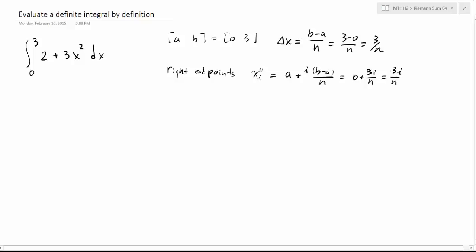We need to evaluate the height, f of xi star, and your function is 2 plus 3x squared. So you put this xi star inside, and that's going to be 2 plus 3 times (3i over n) squared. If you want to simplify a little bit, that's 2 plus 27i squared over n squared.